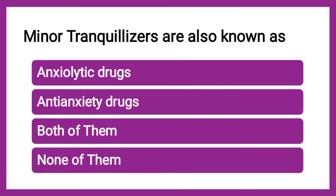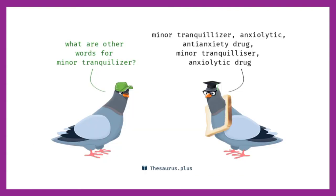Next question: Minor tranquilizers are also known as — anxiolytic drugs, anti-anxiety drugs, both, or none. The correct answer is both. Anxiolytic means to break down anxiety, and anti-anxiety means against anxiety — both meanings are the same. So minor tranquilizers are also known as anxiolytics and anti-anxiety drugs.